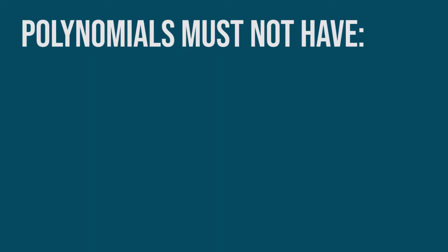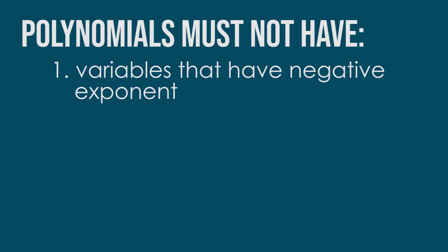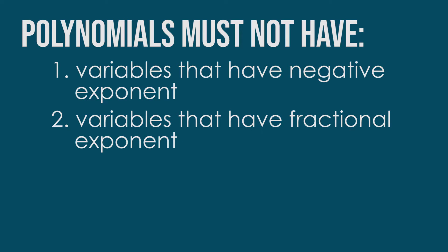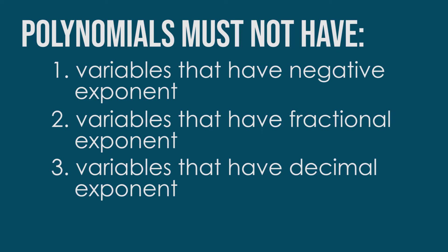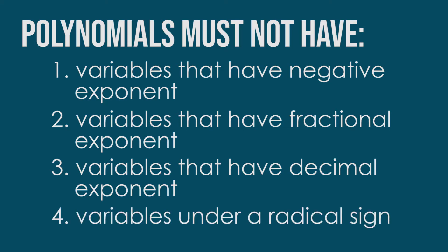An algebraic expression is NOT a polynomial when: first, the variable has a negative exponent; second, the variable has a fraction exponent; third, the variable has a decimal exponent; and fourth, the variable is inside a radical sign.